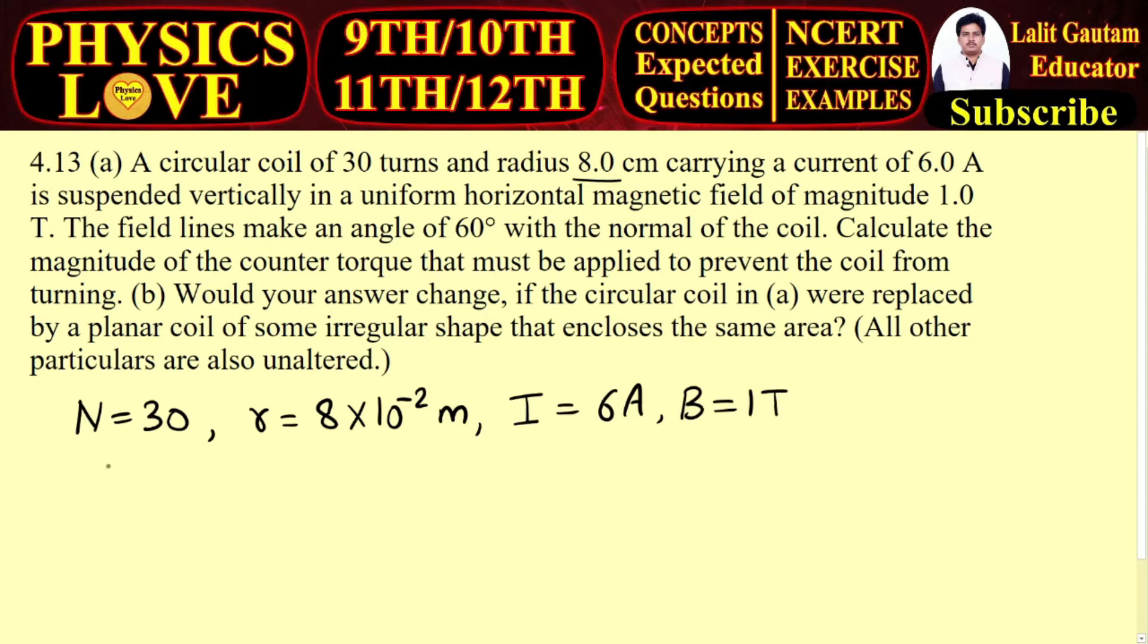The field lines make an angle of 60 degrees with the normal of the coil. If this is the coil and this is the normal of the coil, it means it is an area vector. So the magnetic field lines make a 60-degree angle with the normal of the coil.